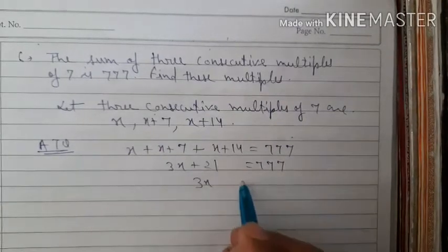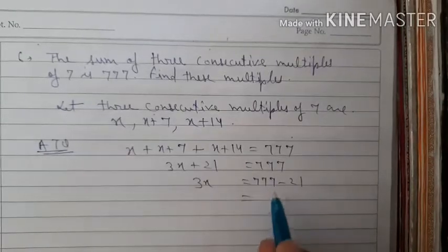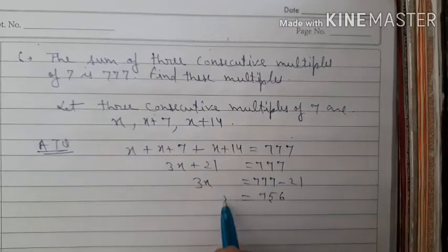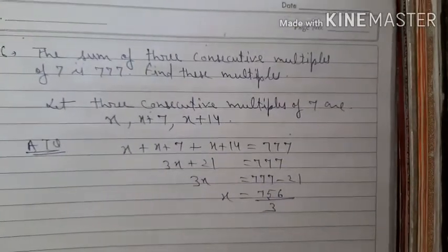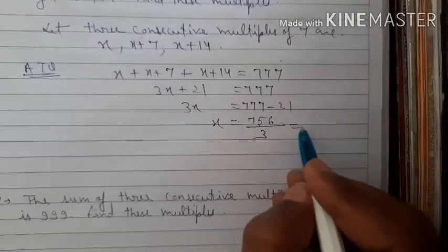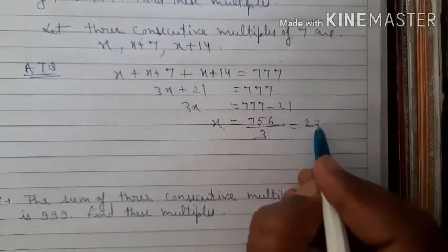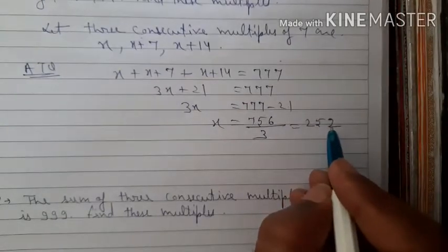So 3x equals 777 minus 21. That is 3x equals 756. Dividing by 3: x equals 756 by 3, which equals 252.